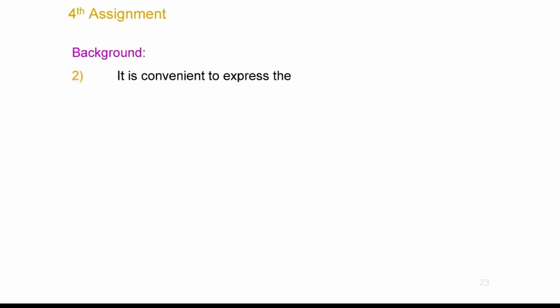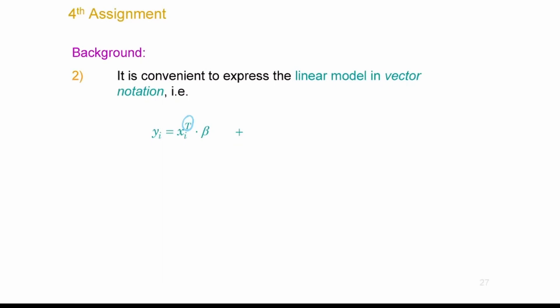Let me talk about the multiple linear regression in general. There are two ways to express it: one involves vector notation and the other is matrix notation. In the vector notation, yi is the observation at time point i for the response, and there is a vector product. Capital T in the exponent means transposition.